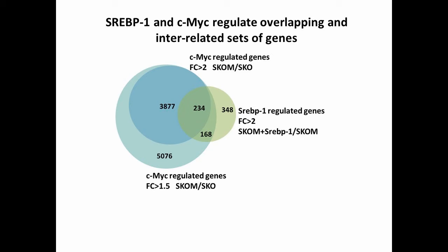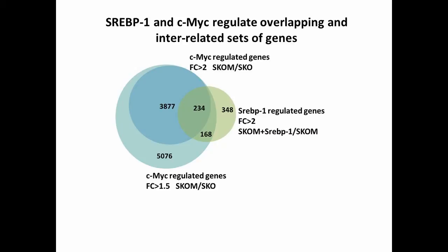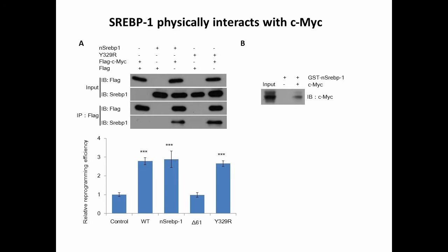We found that these two proteins can regulate overlapping and interrelated sets of genes via microarray data. For the mechanism, we showed that the SREBP1 active form or Y329R mutation that can enhance reprogramming would interact with cMyc directly by co-IP experiments. We also performed a GST pulldown to show that these two proteins can interact in vitro.